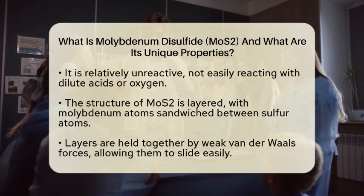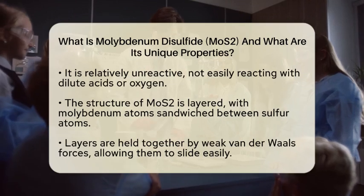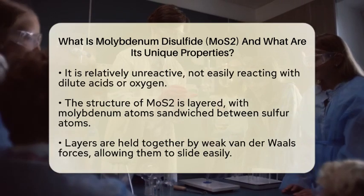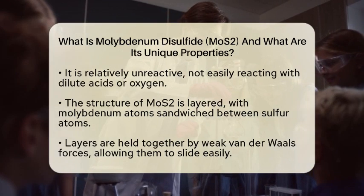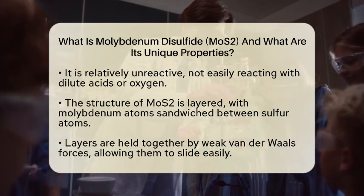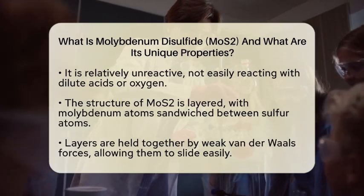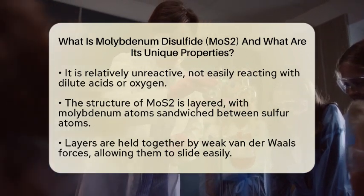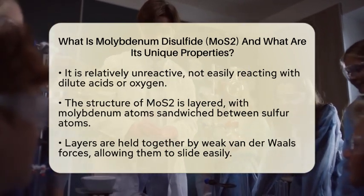The structure of MoS2 is layered, with each layer containing a plane of molybdenum atoms sandwiched between two planes of sulfur atoms. These layers are held together by weak van der Waals forces, allowing them to slide over each other easily. This unique feature is why MoS2 is often used as a dry lubricant, similar to graphite. MoS2 is also a semiconductor with an indirect bandgap of approximately 1.2 electron volts.